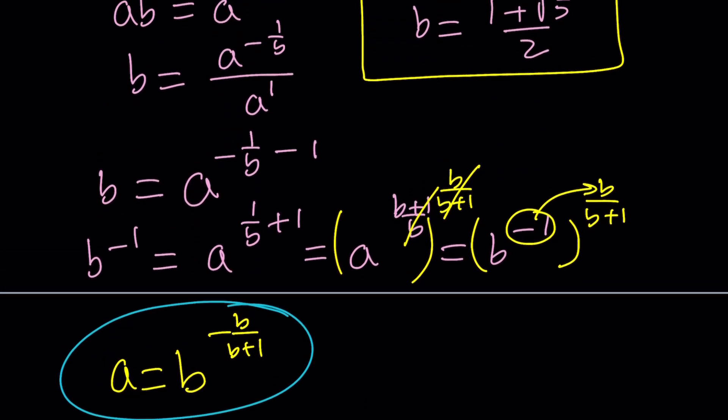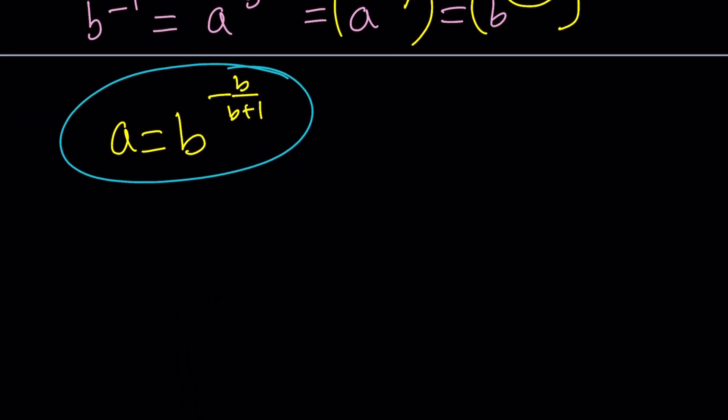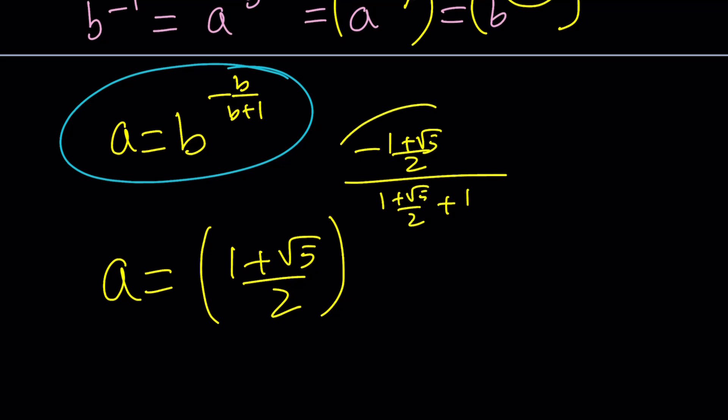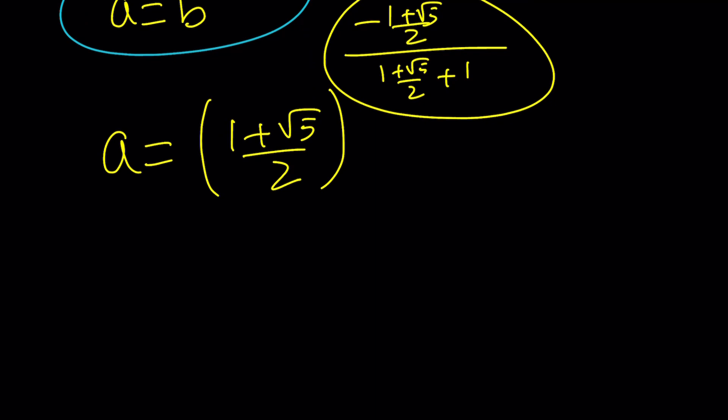But, what about the a value? Oh, man. This is going to be crazy. So, let's go ahead and stick to one of these solutions, because they both work. And, you can definitely do the other one. But, I'm going to go with the more positive one, 1 plus root 5 over 2. And, a is going to be, then, 1 plus root 5 over 2 to the power negative 1 plus root 5 over 2. That's a negative sign in the front. Divided by 1 plus root 5 over 2 plus 1. And, obviously, we can go ahead and take that expression and simplify a little bit.